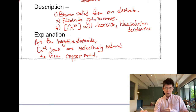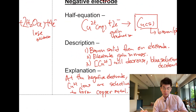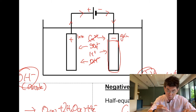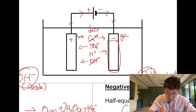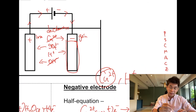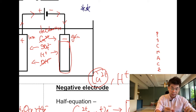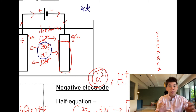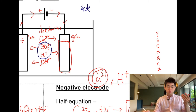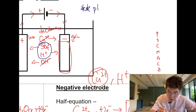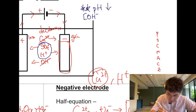OH− is removed and copper is removed, so because copper is removed the solution decolorizes. You must also notice that after the reaction, what is left behind is H+ and SO₄²−. Because OH− decreases while H+ remains the same, the pH will decrease.